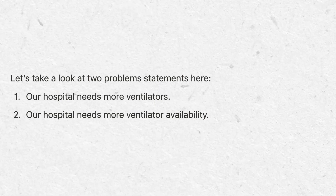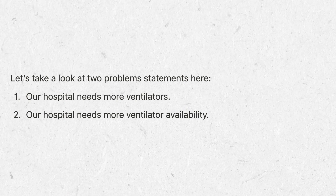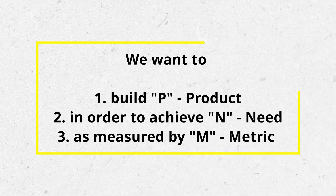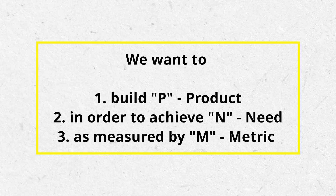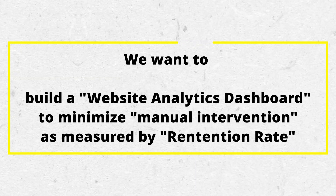Notice that the first statement isn't a problem — it's a solution. The only response is to buy more ventilators. But the solution to the second statement is unclear, which is a good thing — it pushes us to think more deeply. A simple prompt for defining a problem statement: 'We want to build P in order to achieve N as measured by M.' For example: 'We want to build a dashboard in order to minimize manual intervention as measured by the retention rate.' It's our responsibility to take a step back, assess the situation, and define the problem.